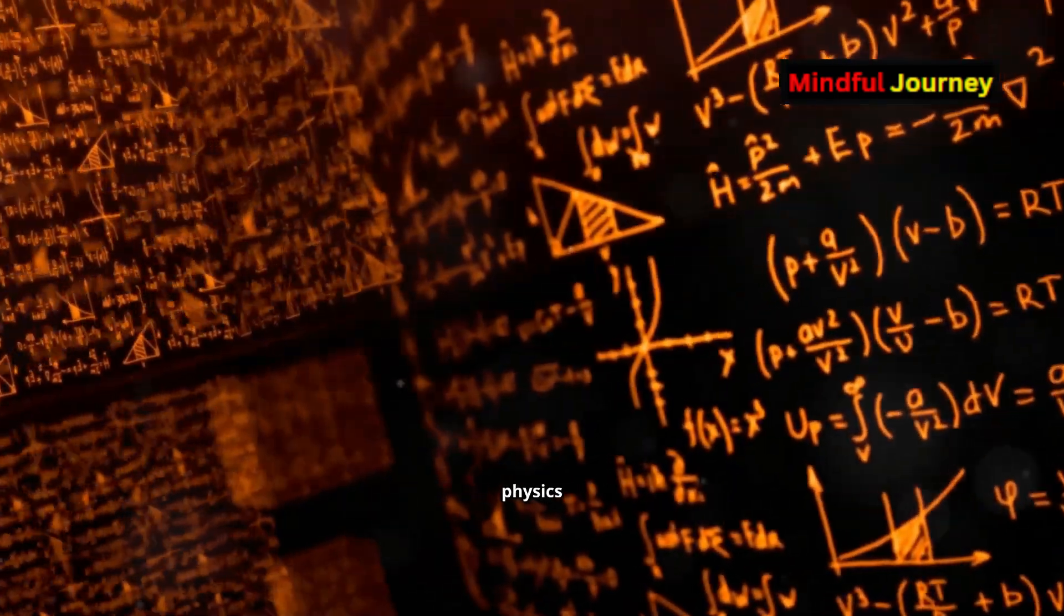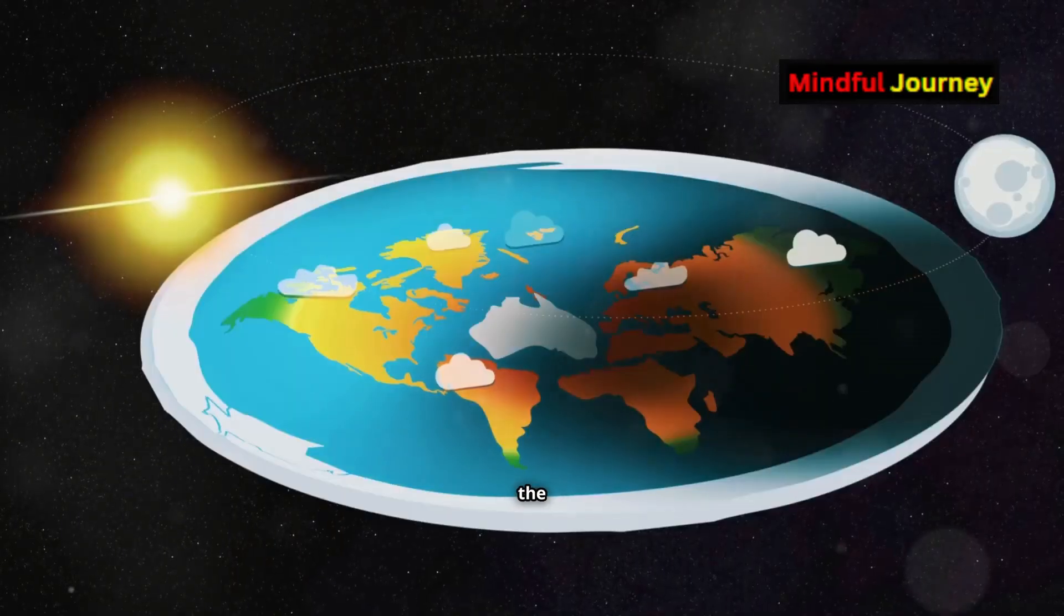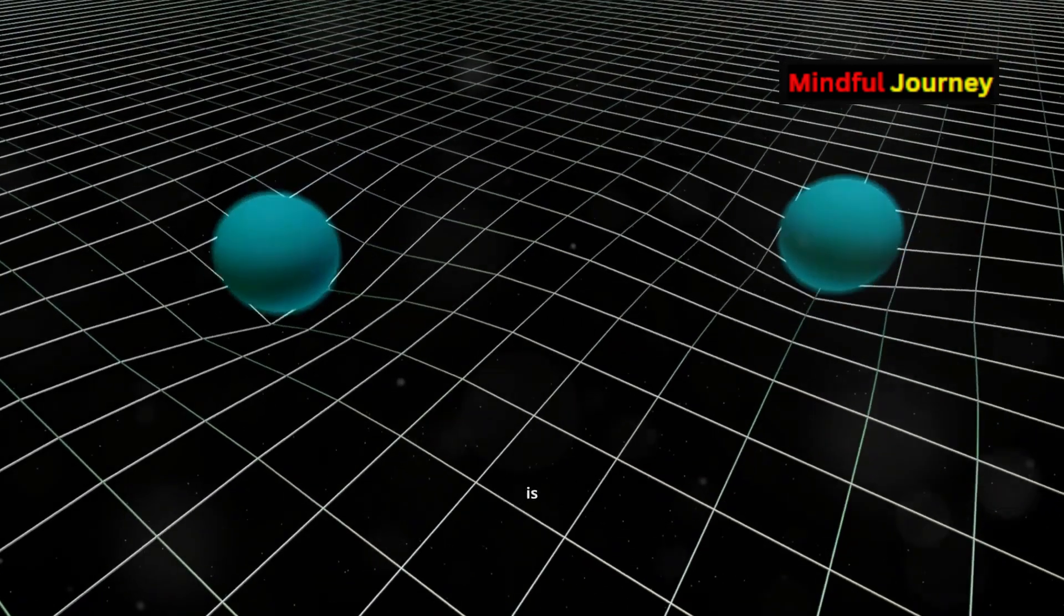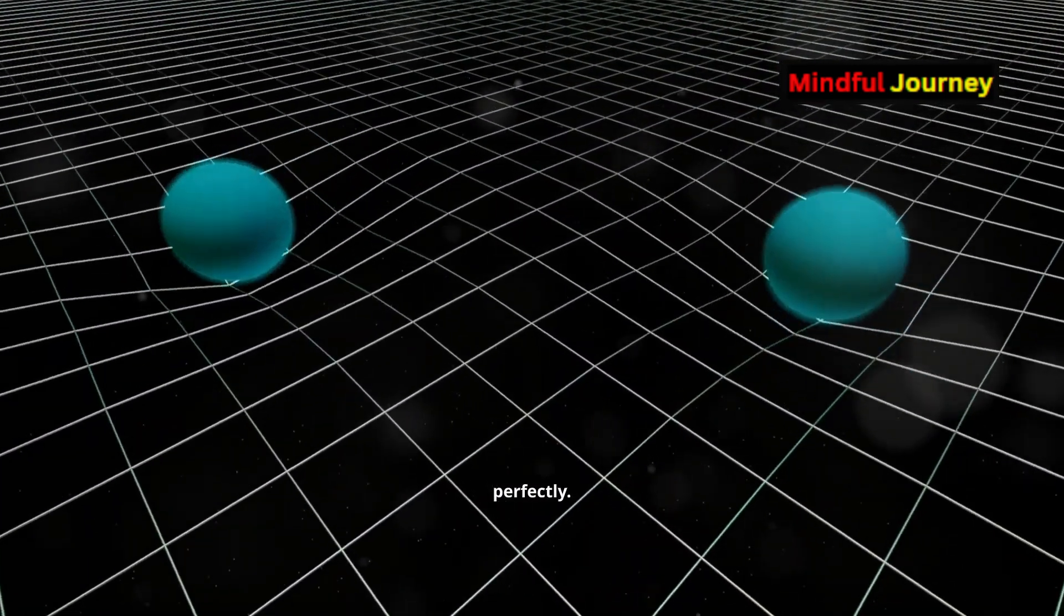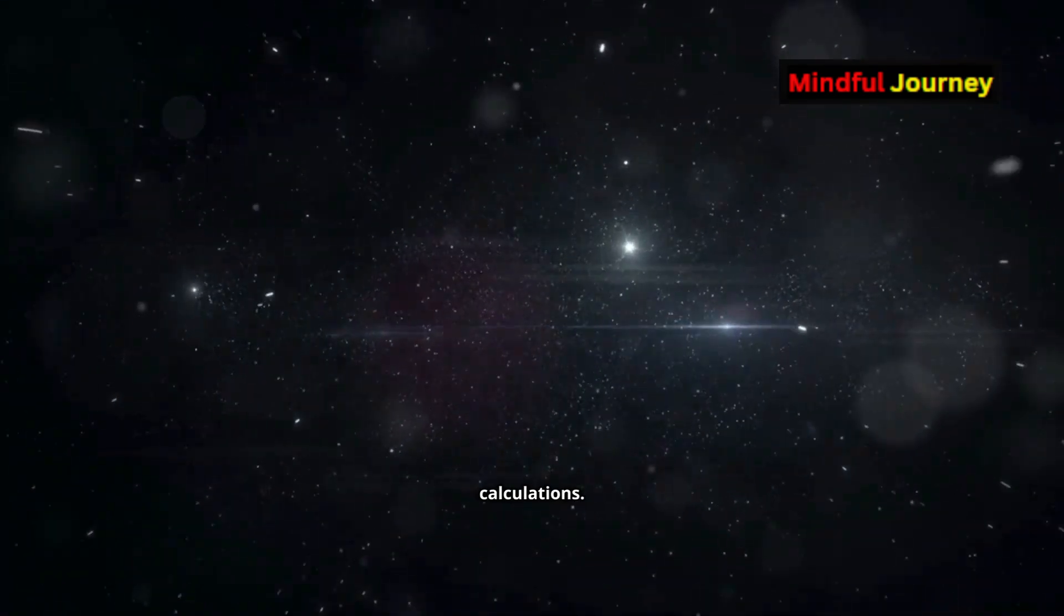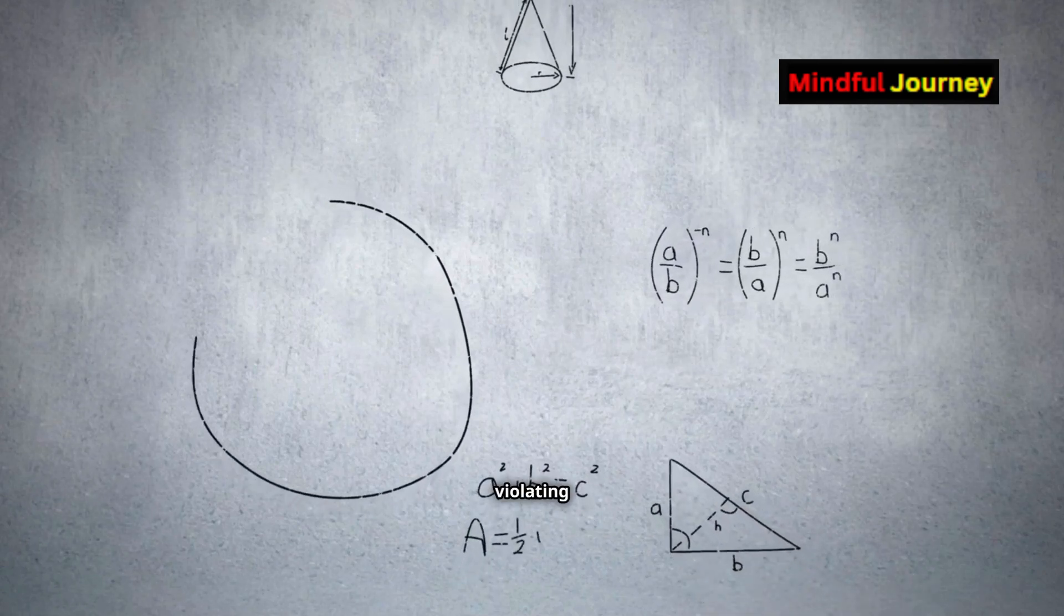When infinity shows up in physics calculations, it usually means something has gone wrong. Take the theory of relativity, for example. As long as an object's speed is below the speed of light, the theory works perfectly. But if you try to exceed that speed, infinities start appearing in your calculations. These infinities indicate that the calculations are violating fundamental laws of the universe, suggesting a mistake somewhere.